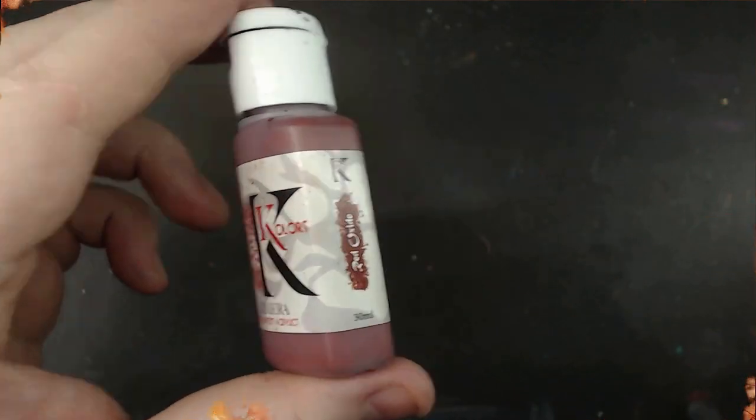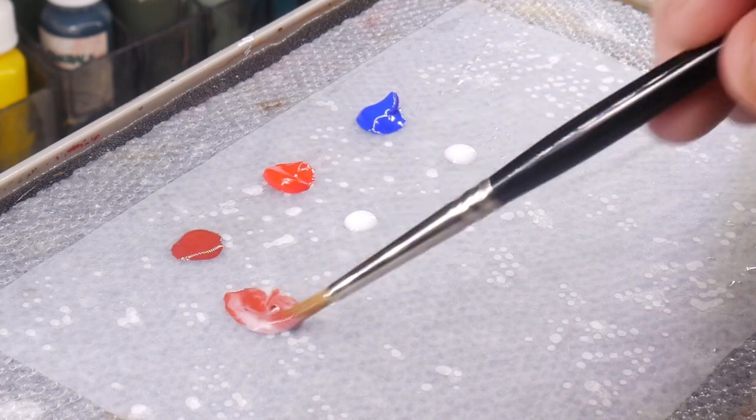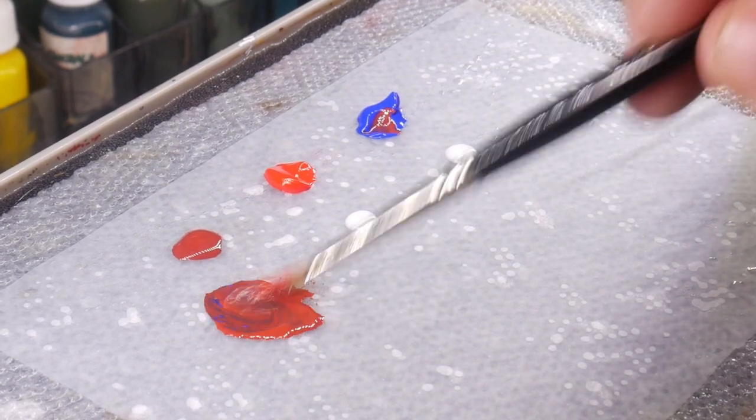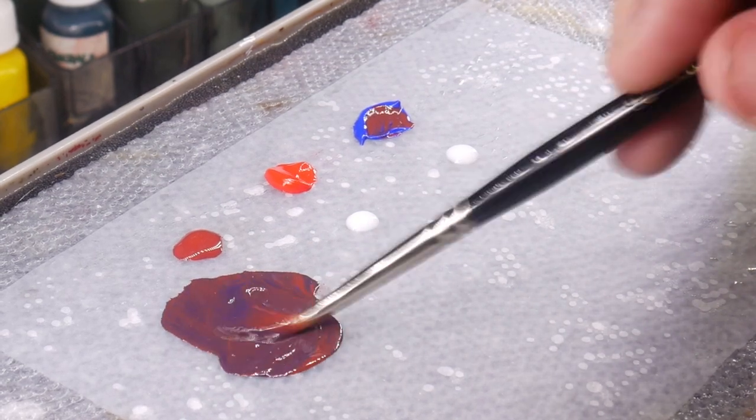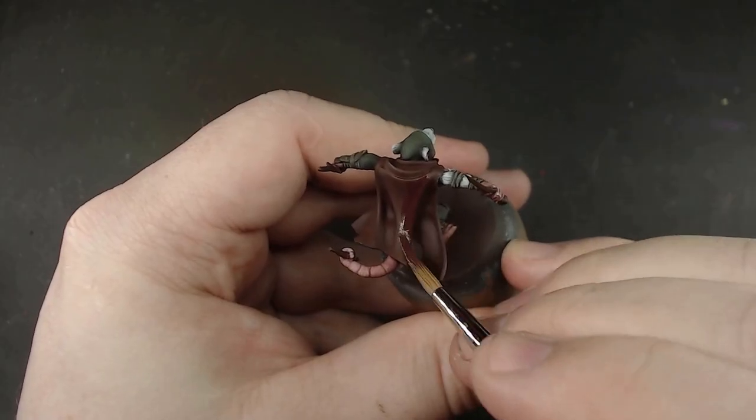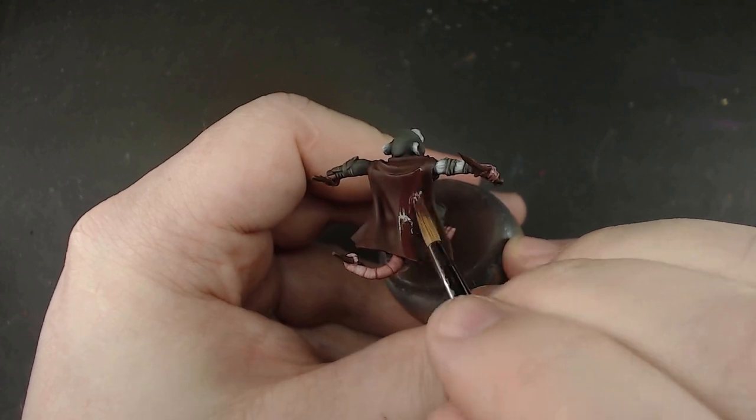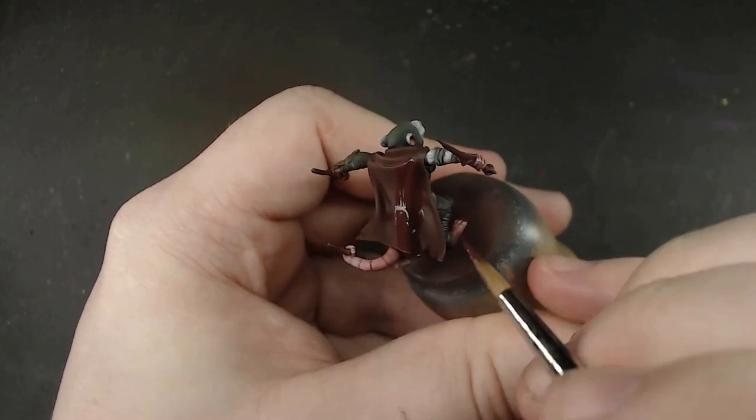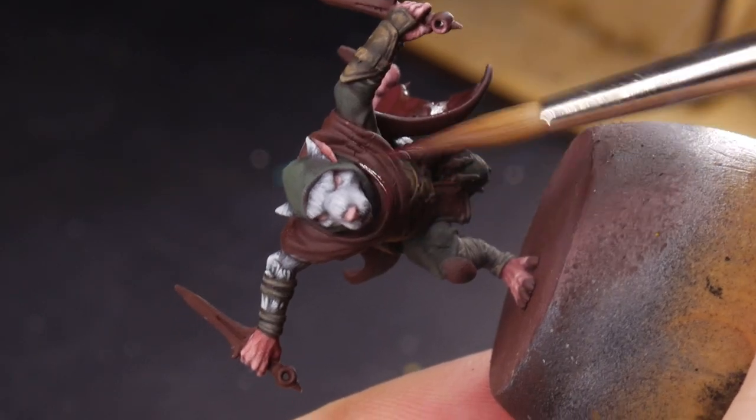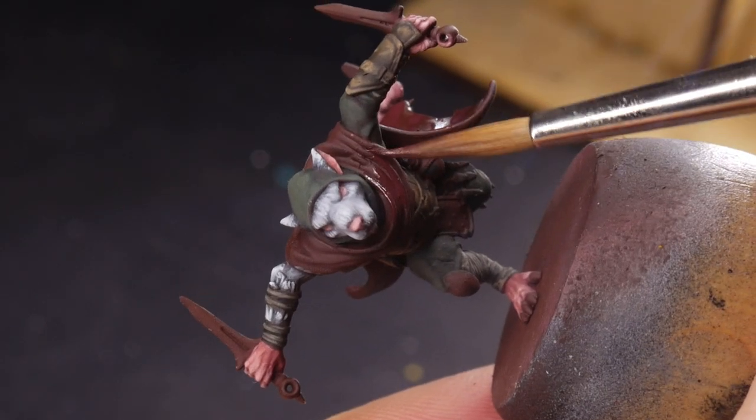Sometimes we painters like to dangle carrots in front of ourselves to help us finish projects. You know, reward ourselves with something if we get the work done. That works, but I find it only works if the reward comes often enough. It's easy to say to yourself, if I get this army done, I'll buy or print the large unit for it. Which would be a nice way to finish a large army off. But what about the unit you're working on right now? What do you get for finishing that?